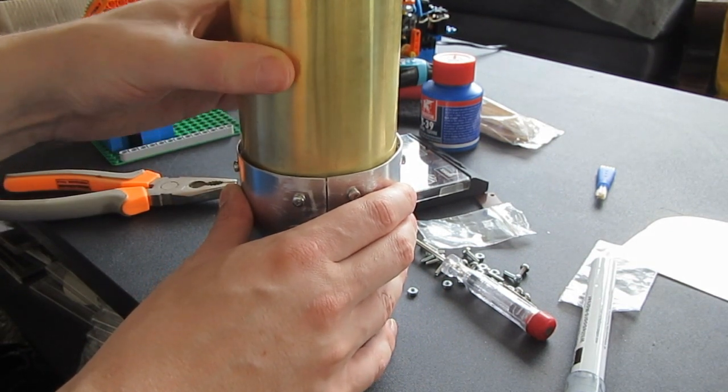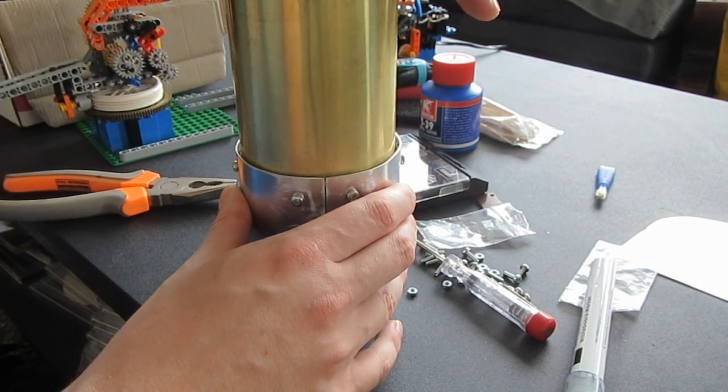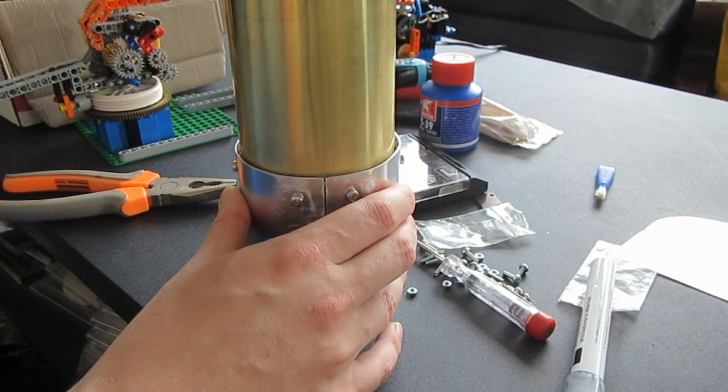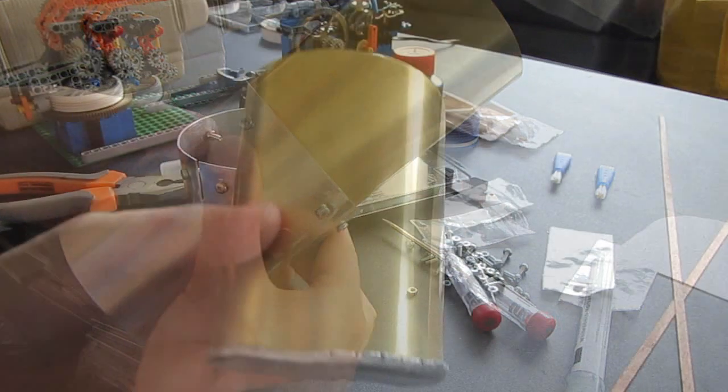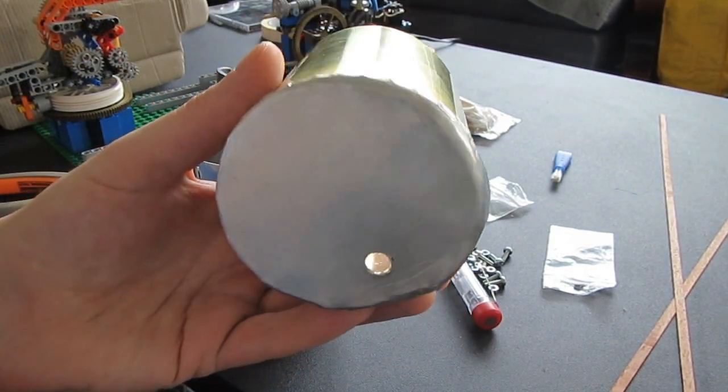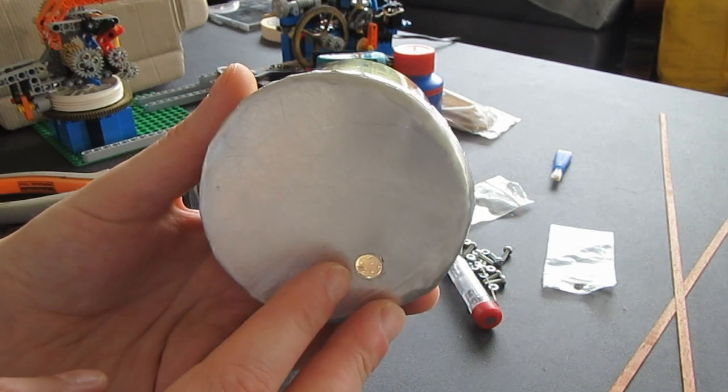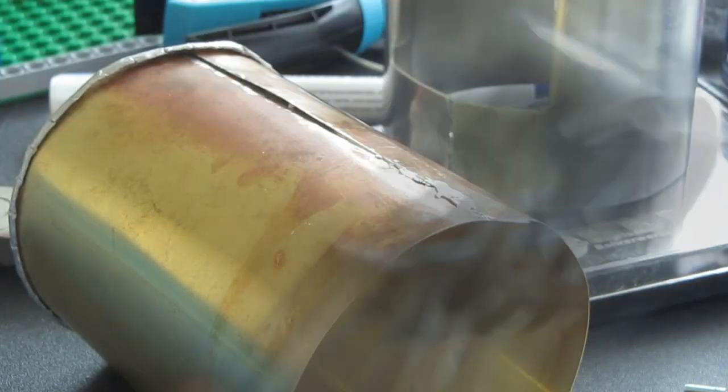And there we go—all screws in place. Now test fitting the boiler, and it's pretty perfect actually. It's very stable and very sturdy, especially with the quite heavy weight of the power supply unit in there. It will be held in place quite properly. I also realized that I still need to drill a hole in the bottom for the power supply cables. So there you go.